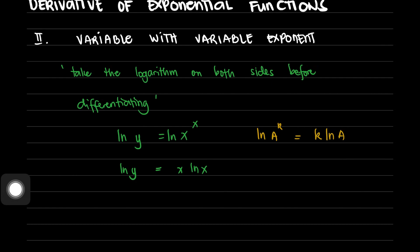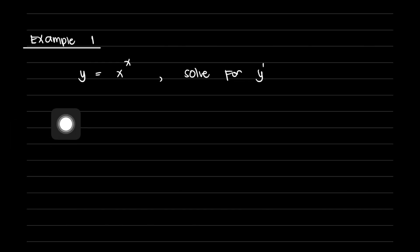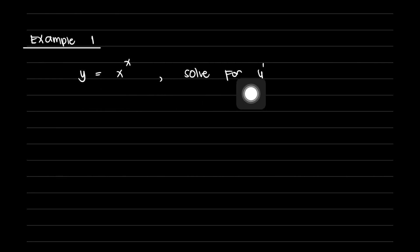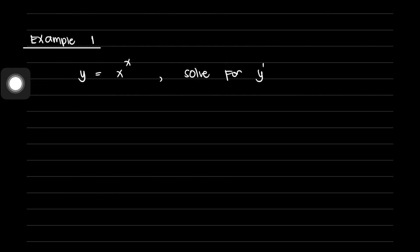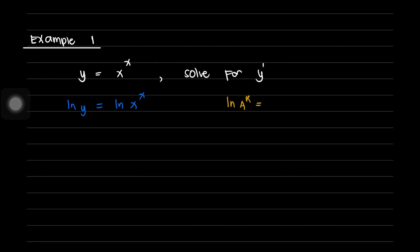Let's solve for y prime in a step-by-step manner for y equals x raised to x. Since this is a variable raised to a variable, the first step is to take the natural logarithm on both sides. So ln of y equals ln of x raised to x. Using the property ln of a raised to k equals k ln of a, this is now equal to: the natural logarithm of y equals x ln of x.